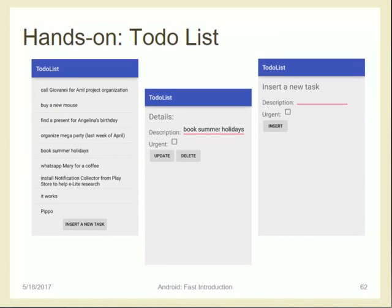Now I will use the remaining time to develop a more complete application. As you know, we developed a to-do list application throughout the course, and during the last laboratory we developed a server with a client side to manage the to-do list. Now I will create a client Android application to communicate with that server. The first view shows the list of tasks with a button to insert a new task.